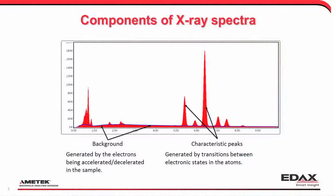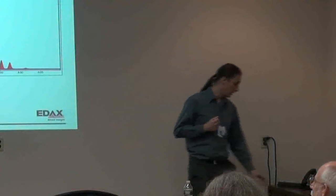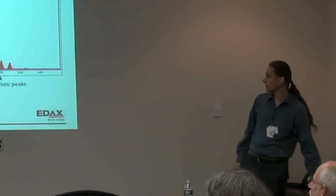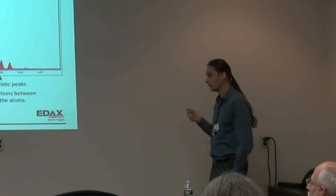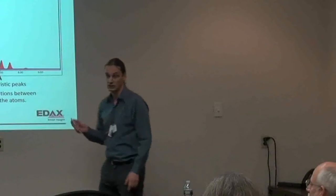This is what you would expect from a normal EDS spectrum. We have a background, which is the continuum we see below the peaks, and then we have the characteristic peaks. The background is generated by electrons being accelerated or decelerated as they travel down through the sample. The characteristic peaks sticking up above the background are generated by transitions between the electronic states in the atoms.